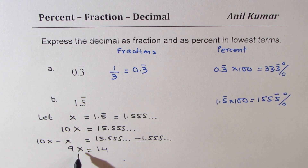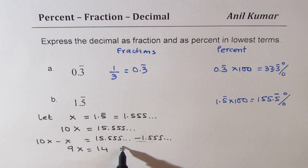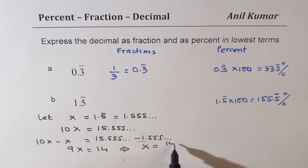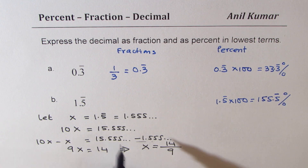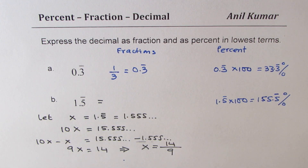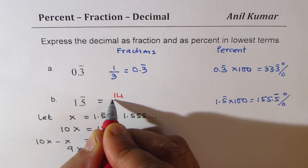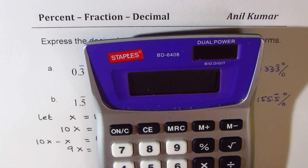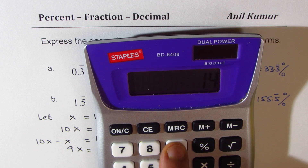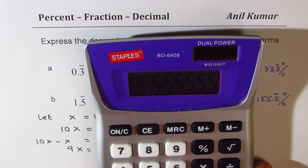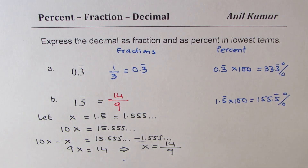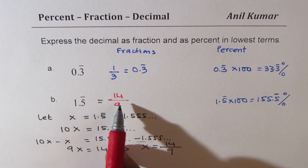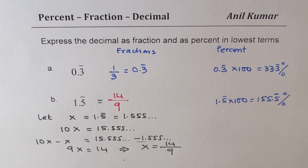So that gives you the answer: x equals 14 over 9. We could write this as 14 over 9. Using a calculator, 14 divided by 9 equals 1.5555 — it repeats. That is how you actually get the fraction equivalent of recurring decimal numbers.